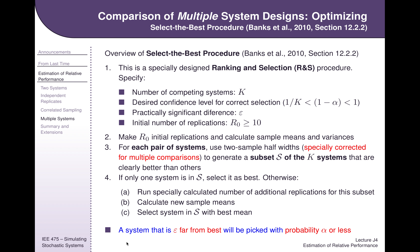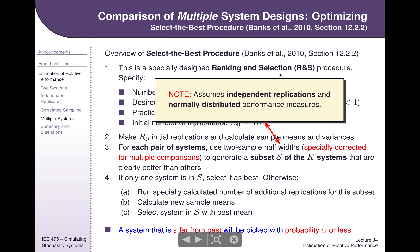With that subset, the book gives you a formula to calculate how many more runs you need for each system in the subset. Once you've run those new runs on this reduced number of models, you just calculate means — you don't need the standard deviations anymore — and you select among that set according to the means. You only actually do the statistical test once, and this is what allows this procedure to keep its family-level type one error rate to alpha. It's a modification to the Bonferroni that allows us to select the best from the systems that come out of the Bonferroni as ambiguous, and it restores some of the statistical power you lose by taking the Bonferroni approach. In the end, a system that is epsilon far from the best will be picked with probability alpha or less, and that's what we want.